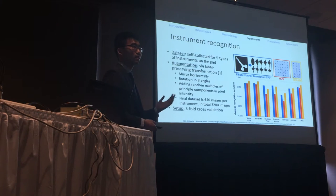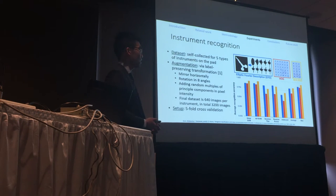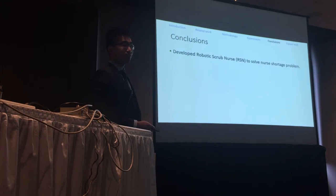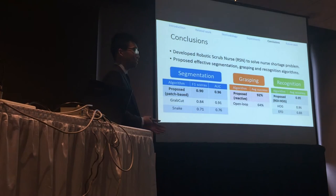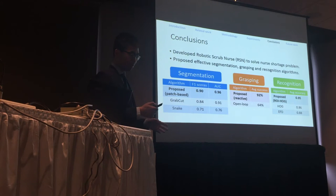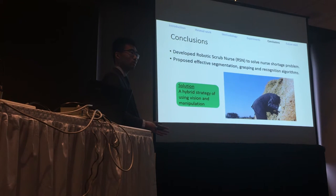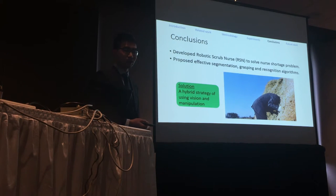In conclusion, we developed a robotic scrub nurse system to address the nurse shortage problem, proposing effective segmentation, grasping, and recognition algorithms. Extensive experiments demonstrate the effectiveness of all three algorithms. The key take-home message is: when you have a robot doing computer vision, leverage the robot itself — make the robot interact with the instrument and perform more robust recognition. If you have that capability, use it, and it will definitely help.